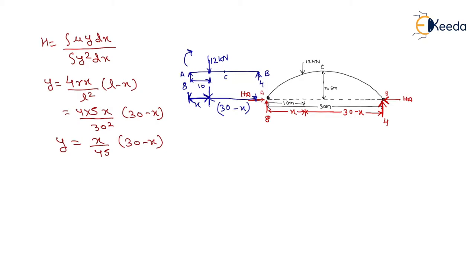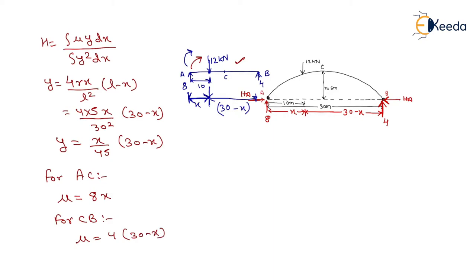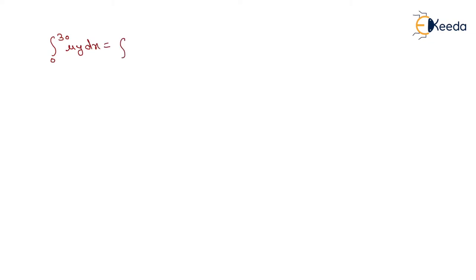For the calculation of the beam moment mu, a simply supported beam diagram is used. For the AC portion, the beam moment equals 8X due to the 8 kilonewton reaction. For the CB portion, the beam moment equals 4(30 minus X) due to the 4 kilonewton reaction. We can then compute the numerator integral as the sum of the integral from 0 to 10 of 8X·Y·dX plus the integral from 10 to 30 of 4(30 minus X)·Y·dX, giving a value of 44,000/9.